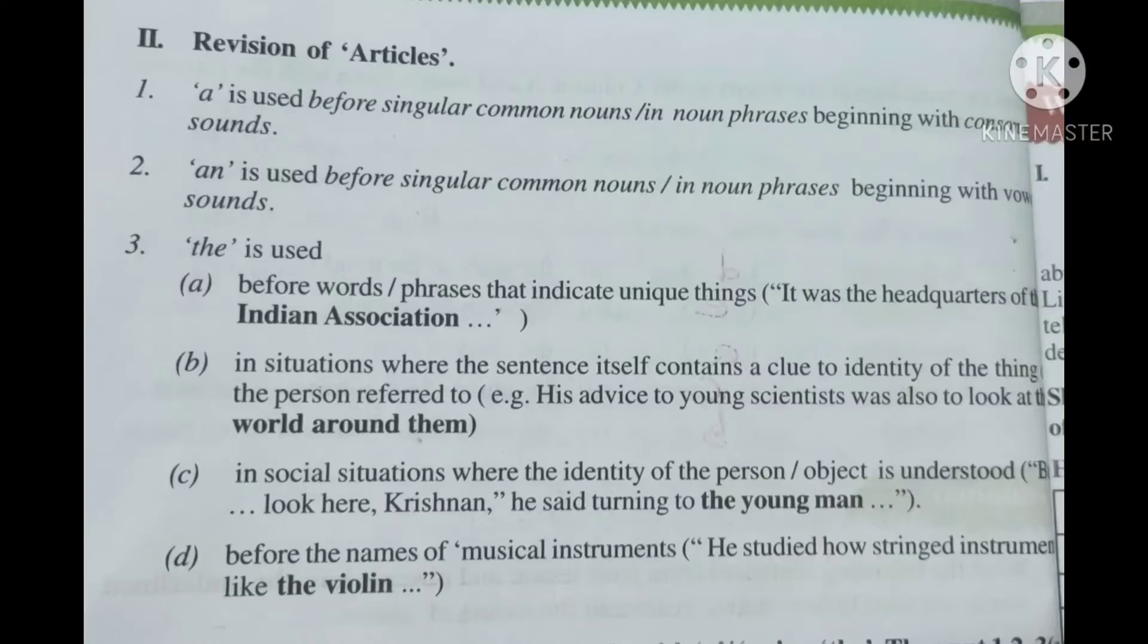See here in this slide. 'A' is used before singular common nouns in noun phrases beginning with consonant sounds. What are consonants? B, C, D, F, G, H, J, K etc. These will be consonants.